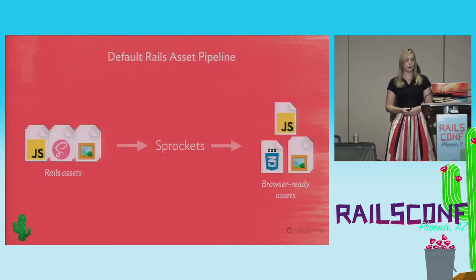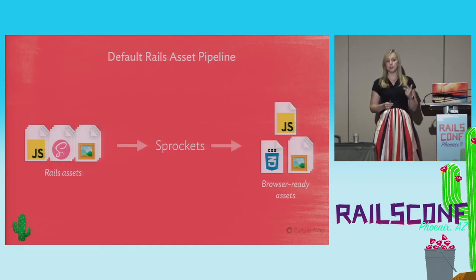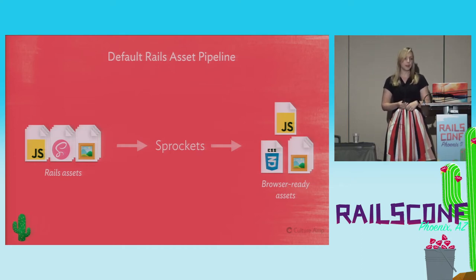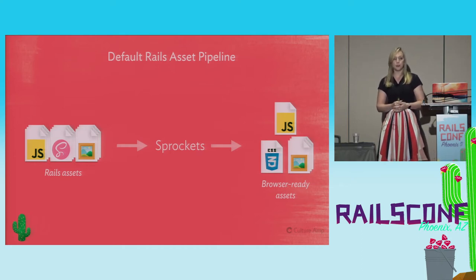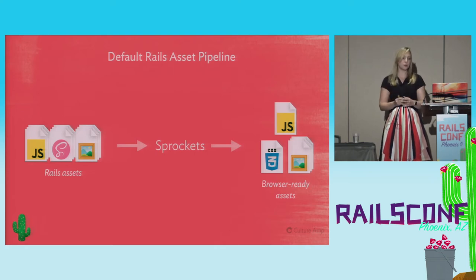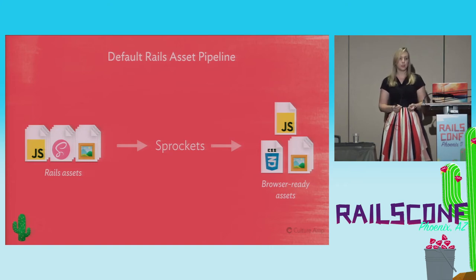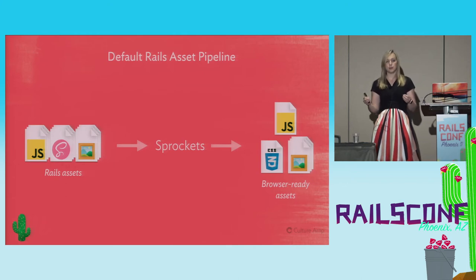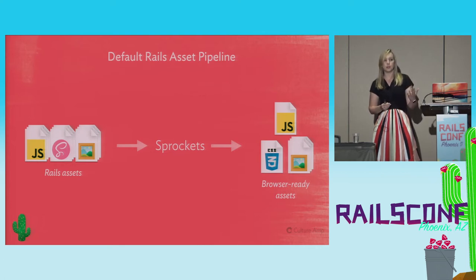The default Rails asset pipeline uses Sprockets — all your JavaScript, images, and CSS is processed by Sprockets before it gets to the client. Sprockets uses require trees: you require another file in your JavaScript, Sprockets gets the content from that file, puts it in as a bundle, and that's what gets served in production. When it creates these files during asset compilation, it puts a hash of the file contents into the file name, so every time you release a new version it prevents the browser from caching the old file.